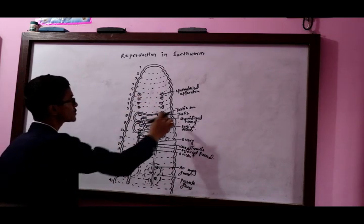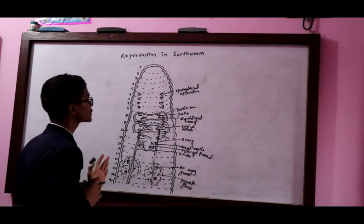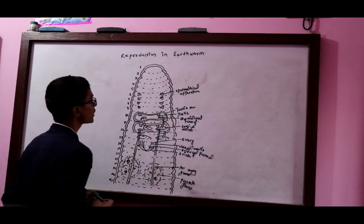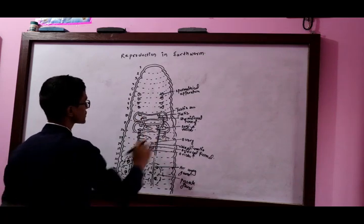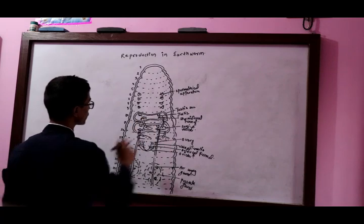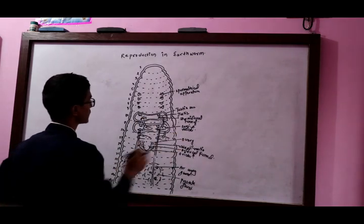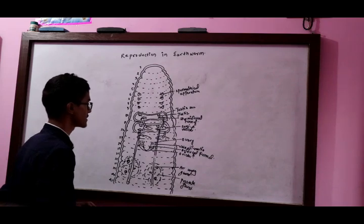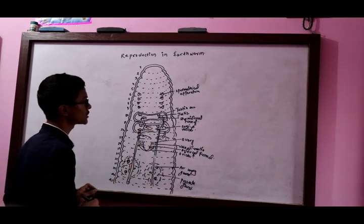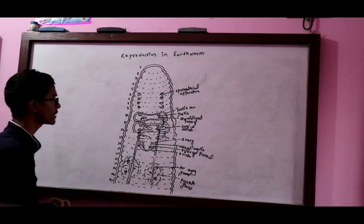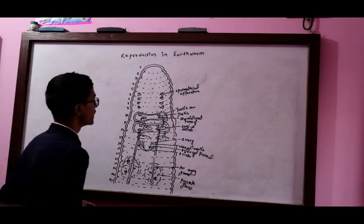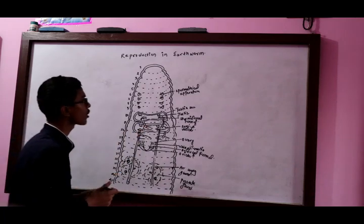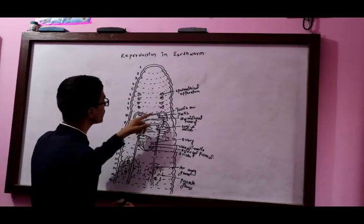This is a testis, a finger-like projection, segments 6-8, and sperm is produced by the testis. The testis is located in the lower part. This is a seminal vesicle. This is a large circular structure. The testis is located in the lower part. This is a spermatic funnel.